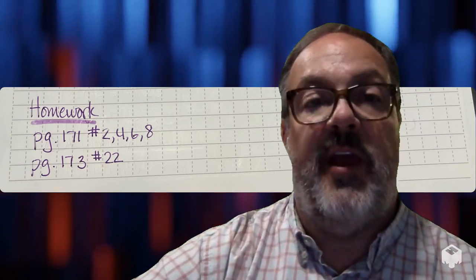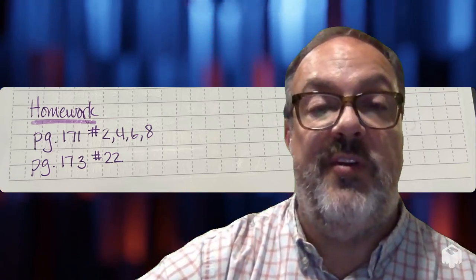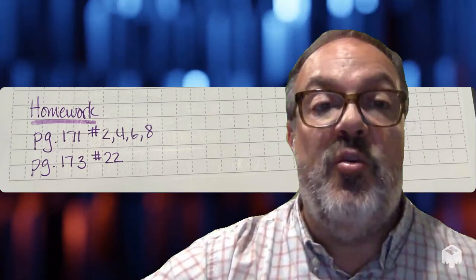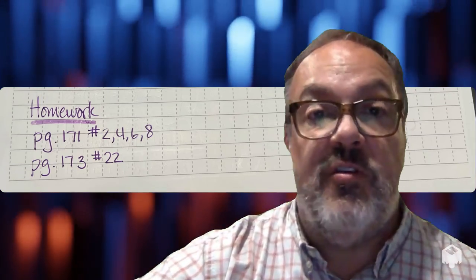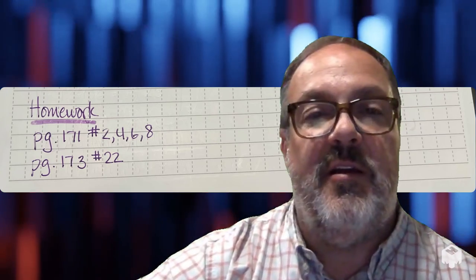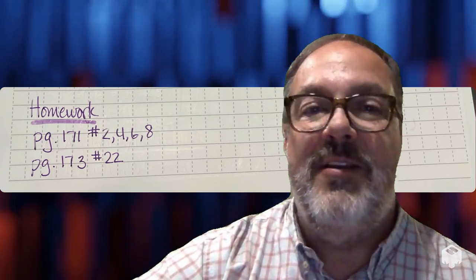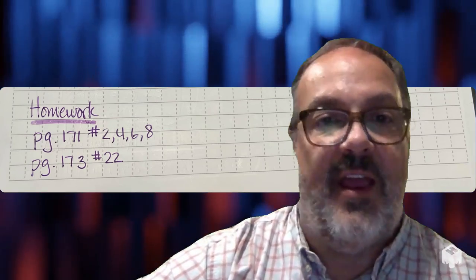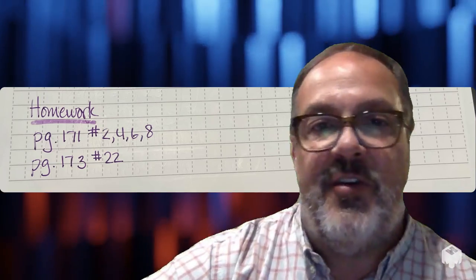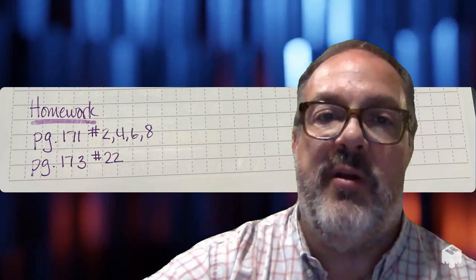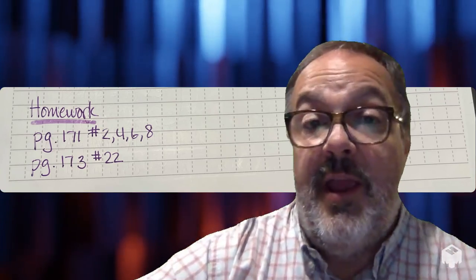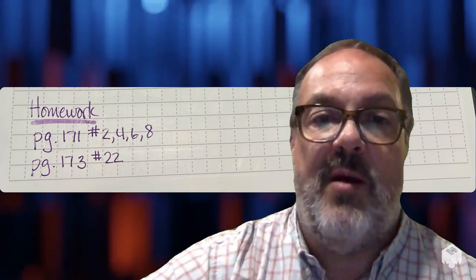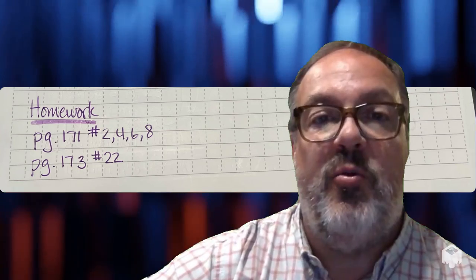Your homework for tonight is on two pages. On page 171, do problems 2, 4, 6, and 8. And then on page 173, do problem number 22. Make sure you're showing your work — don't just show an answer, and don't go right to something like Photomath or some online site that gives all the answers. Just writing down answers or copying from somebody else does not help you at all. So please make sure you're doing the work. If you have questions because you couldn't get them solved, that's what our next class period is going to be about. Good luck, and we'll see you soon.